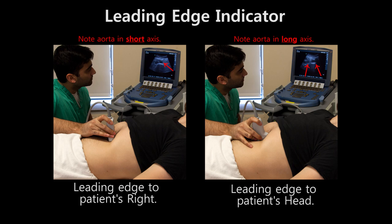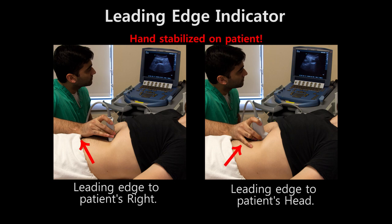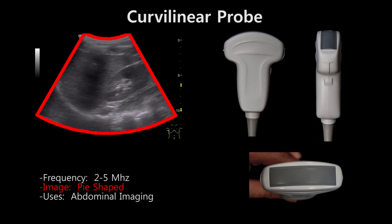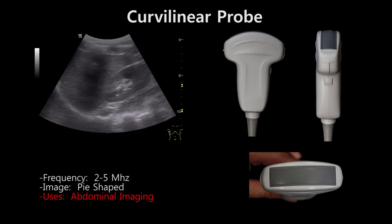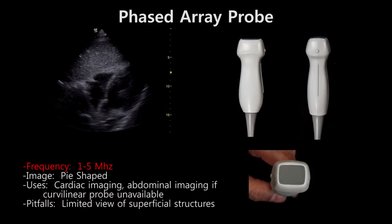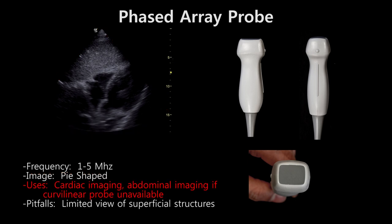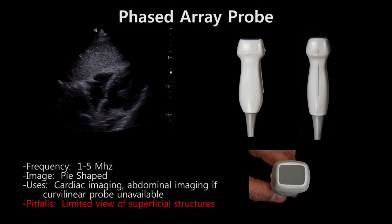Gel is used as a medium to transduce ultrasound waves. Use your hand to stabilize the probe on the patient. The curvilinear probe transmits between 2 to 5 megahertz frequency. It is characterized by low resolution but high penetrance. It gives a pie-shaped image and is typically used for abdominal imaging. The phased array probe transmits at 1 to 5 megahertz frequency, with moderate resolution and moderate penetrance. It gives a pie-shaped image with a narrower point than the curvilinear probe, and is typically used for echocardiograms and imaging between rib spaces given its small footprint. When a curvilinear probe is not available, the phased array can be used for abdominal applications such as the FAST scan, though its smaller footprint gives a less complete view of structures close to the probe.